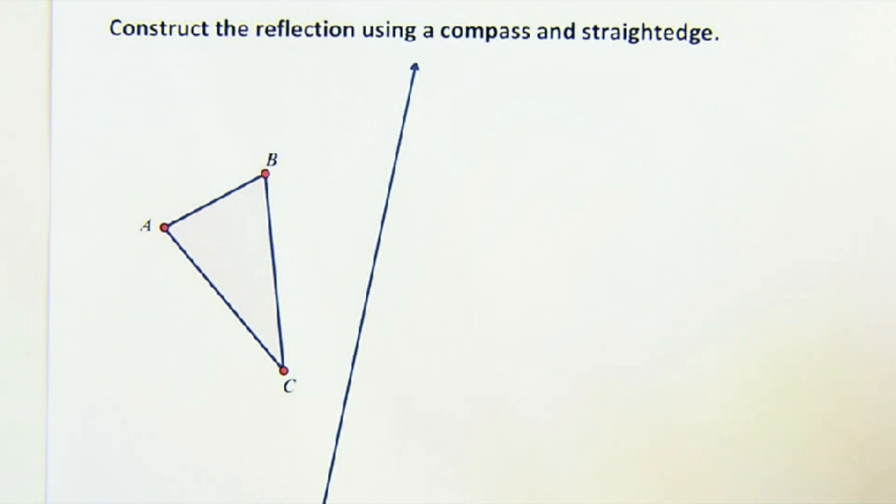Now, understand that a construction can be defined differently. You could do it based off of patty paper. You could do it by folding a piece of paper. There's different ways to do reflections. Here we're kind of looking at just compass and straight edge operations.